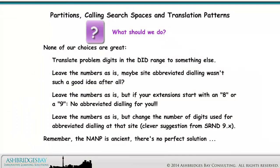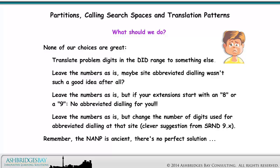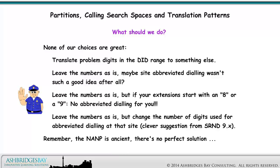What should we do? None of our choices are great. Option one: translate problem digits in the DID range to something else. Option two: leave the numbers as is — maybe site abbreviated dialing wasn't such a good idea after all. Option three: leave the numbers as is, but if your extensions start with an 8 or a 9, no abbreviated dialing for you. Option four: leave the numbers as is, but change the number of digits used for abbreviated dialing at that site.